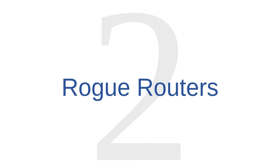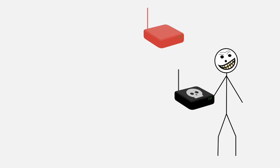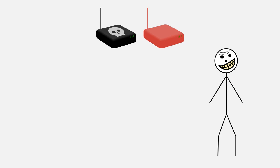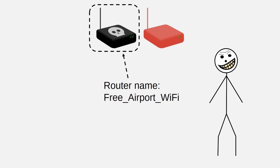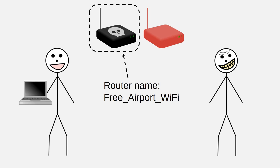Wireless security threat number two is rogue routers. A rogue router is an illegitimate router. Attackers set up rogue routers to prey on casual internet users who connect to them. A cybercriminal might set up a rogue router anywhere people expect free Wi-Fi. Airports, for example, are popular locations. Attackers give the rogue routers plausible names like 'Free Airport Wi-Fi' to attract users. But once users are connected, the attackers use those rogue routers to sniff the wireless traffic on them.